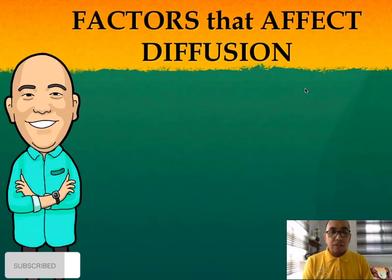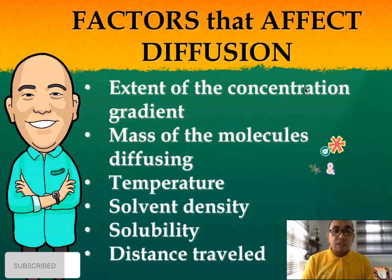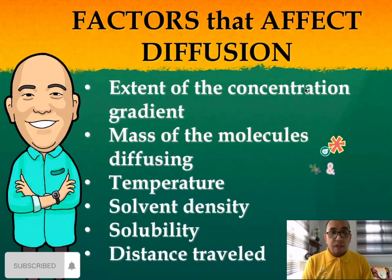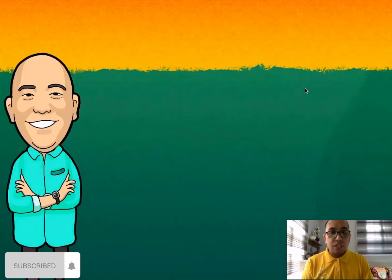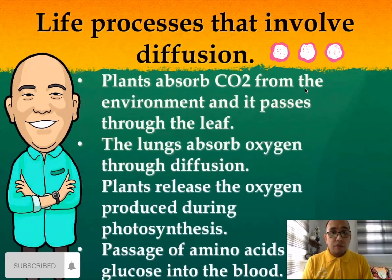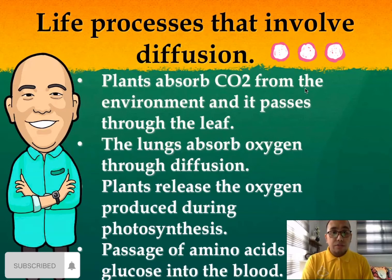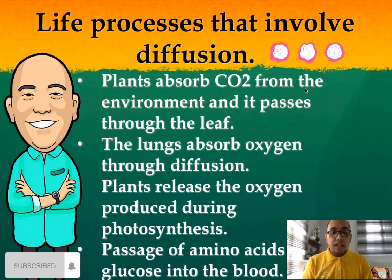These are the factors that affect diffusion: number one, extent of the concentration gradient; two, mass of the molecules diffusing; three, temperature; four, solvent density; five, solubility; and six, distance traveled. We can also apply diffusion to real-life situations: plants absorb carbon dioxide from the environment through the leaf; our lungs absorb oxygen through diffusion; plants release oxygen produced during photosynthesis via diffusion; and amino acids and glucose pass into the blood through diffusion.